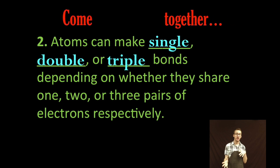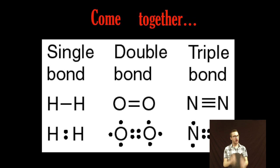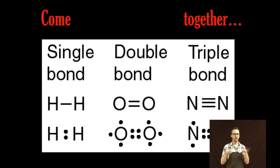Now atoms can make what we call single, double, or triple bonds depending on how many electrons they share. Take a look at your screen. We've got an example of a single bond, a double bond, and a triple bond. Notice in a single bond, a single shared pair of electrons. In a double bond, two shared pairs, and in a triple bond, three shared pairs. No quadruple bonding.